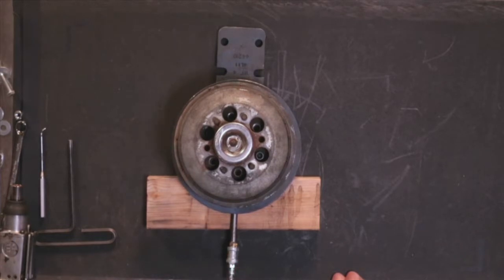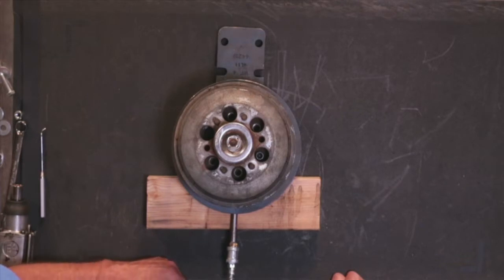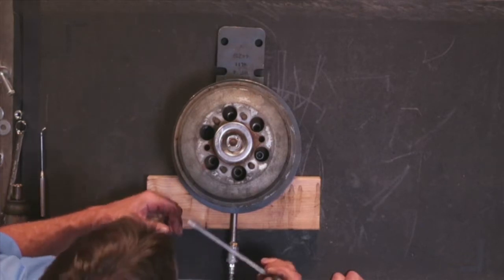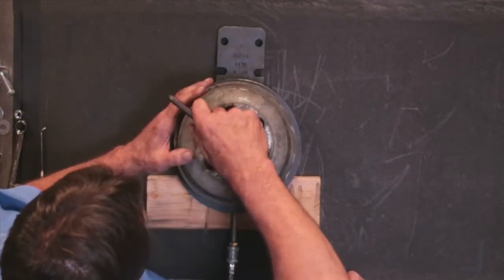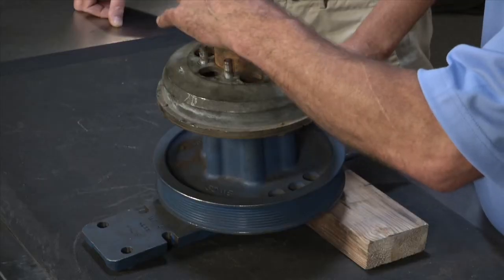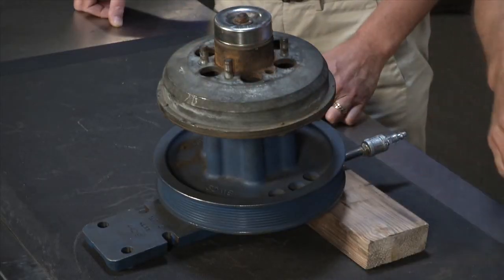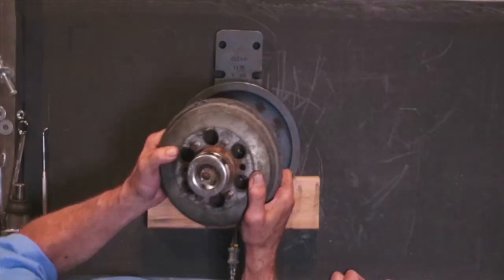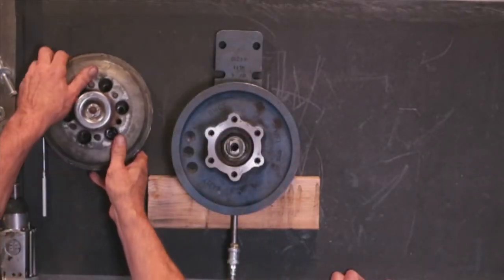Remove the six Allen bolts that secure the fan clutch to the pulley. Once the bolts are removed, you can remove the fan clutch from the pulley. Now remove the plastic coupler on the back of the fan clutch and discard.